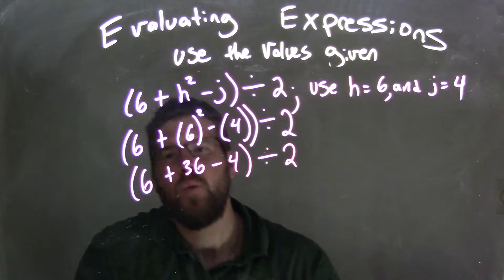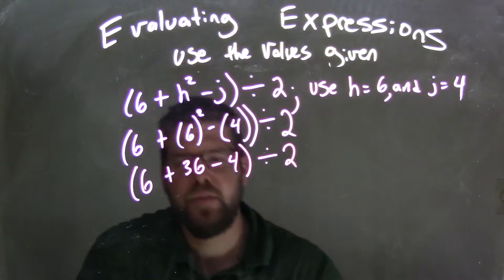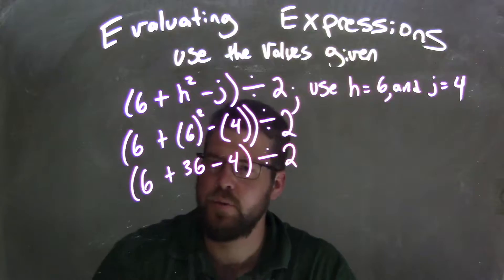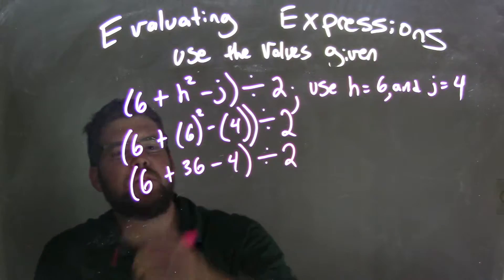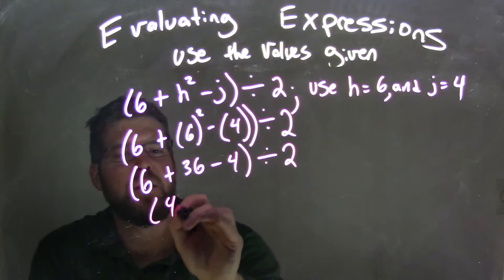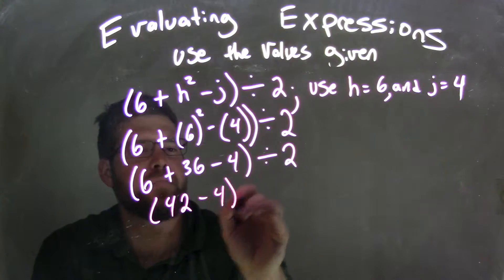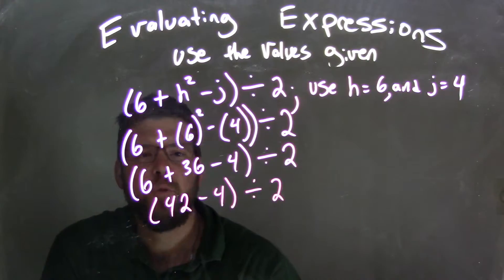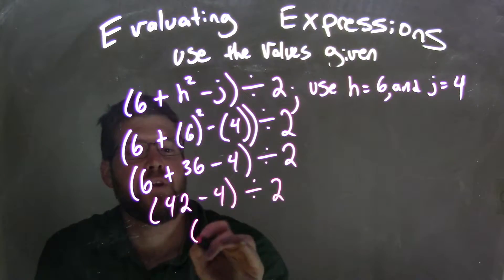Well now, we have all of this inside the parentheses. So we can deal with that all together if we like. Now, so we have 6 plus 36 minus 4, well, 6 plus 36 is 42 minus 4, and 42 minus 4 is 38.